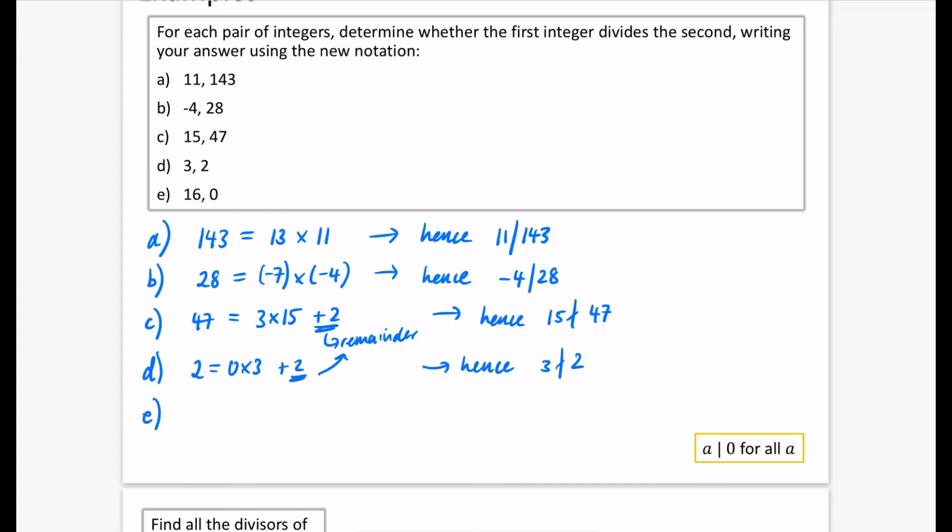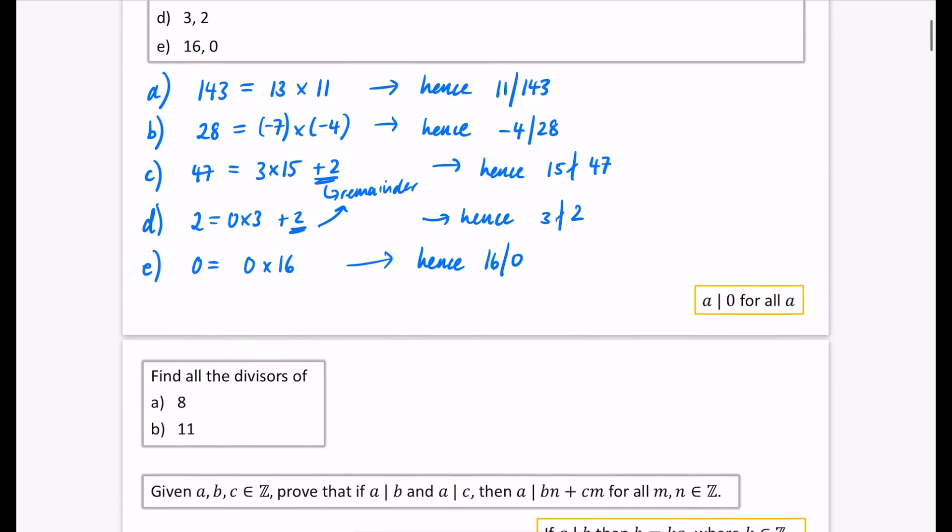And then our last one is 16 dividing 0. So we'll say that second number, can that second number 0 be written as something multiplied by 16? Well, yeah, it can be 0 times 16. So this is quite strange. So now we're saying hence, 16 divides 0. And actually, this is going to be true for all values of a. Anything divides 0 because 0 times by that number will give us 0. So the ones where we could, we were able to write it as a multiplication like this. So that last one is probably the only strange one that we've got there.